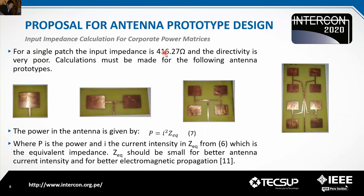For a single patch, the input impedance is 416 ohms and the directivity is very poor. The power in the antenna is given by P = I² × Z, where P is power, I is current intensity, and Z is the equivalent impedance. The equivalent impedance should be small for better antenna current intensity and for better electromagnetic propagation.